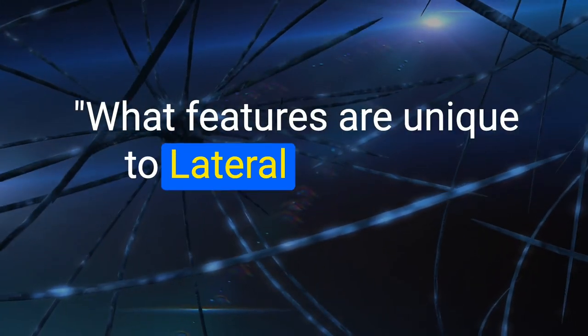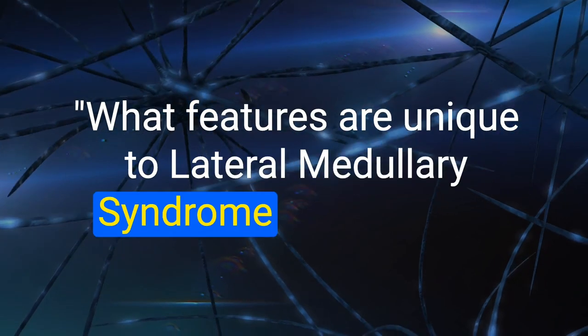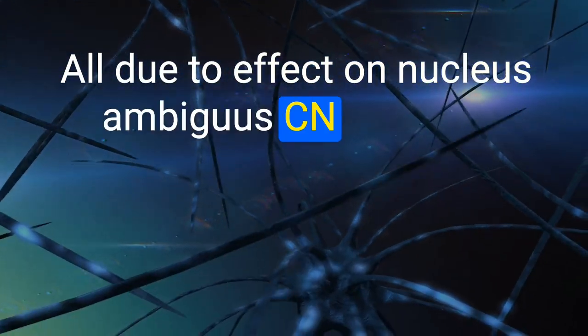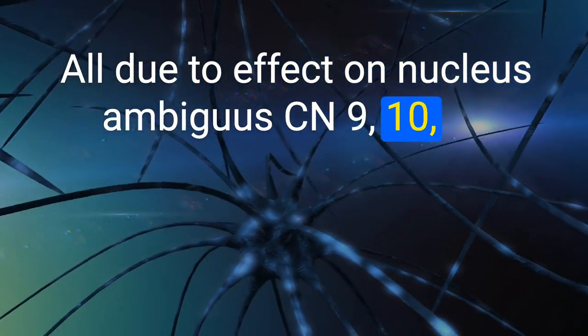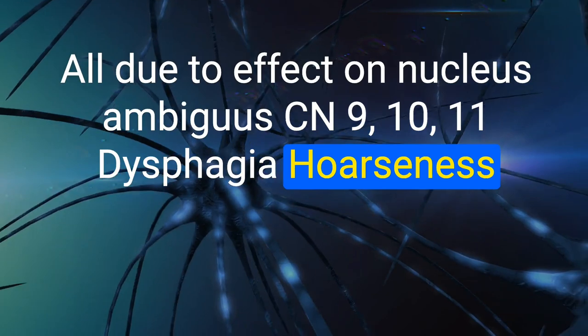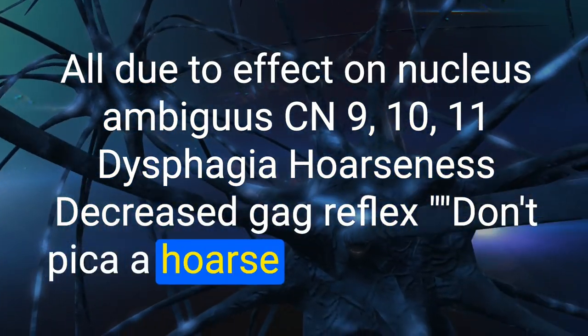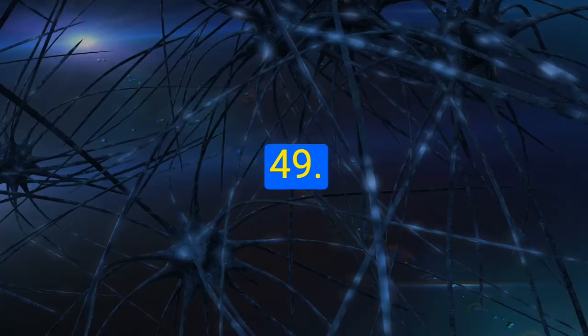48. What features are unique to lateral medullary syndrome (Wallenberg)? All due to effect on nucleus ambiguus (CN 9, 10, 11): dysphagia, hoarseness, decreased gag reflex. Mnemonic: 'Don't peek at a horse that can't eat.'